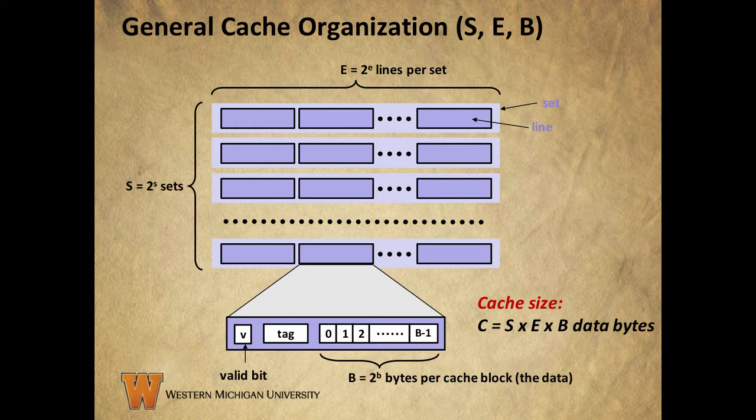The tag field contains lowercase t bits. The number is calculated using lowercase m — the number of bits in a memory address for the system — lowercase b which is the exponent giving us capital B number of bytes, and lowercase s which is the exponent giving us our number of sets capital S. To get the number of bits in our tag field we simply add b and s and subtract from m. We'll see some examples of how that works and why it makes sense in the next few slides.